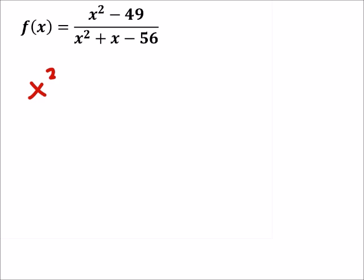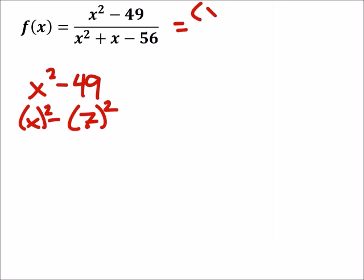So in the numerator, I got x squared minus 49. The nice thing about this is I have the difference of squares. x squared is a perfect square with x, and 49 is a perfect square as well with 7. That's 7 squared. So I got x squared minus 7 squared. The difference of perfect squares means that we can split this up into x minus 7 and x plus 7.